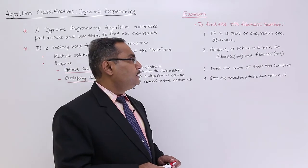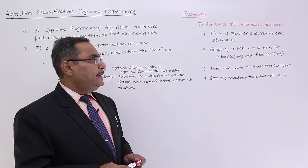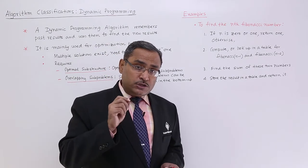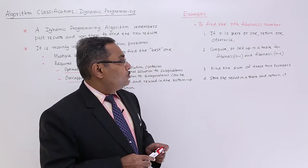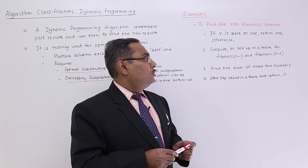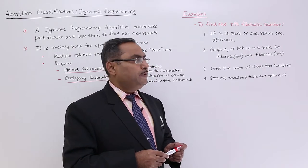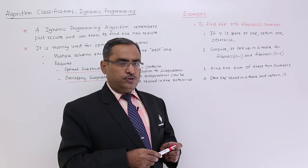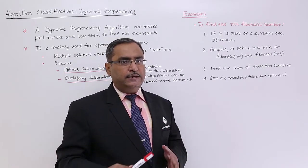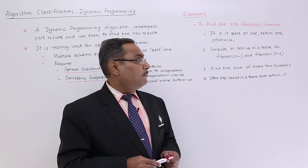Otherwise, compute or look in a table where the past results were stored. Compute or look up in a table for Fibonacci(n-1) and Fibonacci(n-2). Either you shall compute if the value is not present in the table, otherwise you can get it from the table.